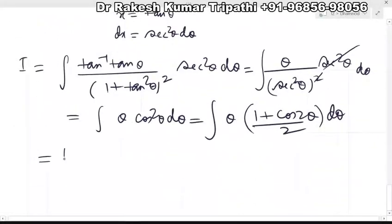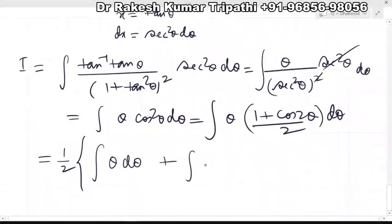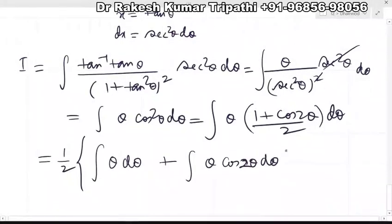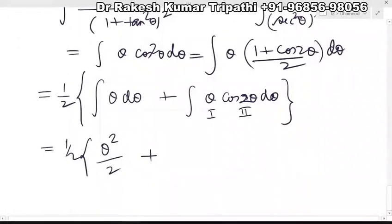This integral will be divided into two integrals. The first part is ∫θ dθ and the second will be ∫θ cos 2θ dθ. The integral of θ with respect to θ is θ²/2. To integrate the second part, we shall use integration by parts.